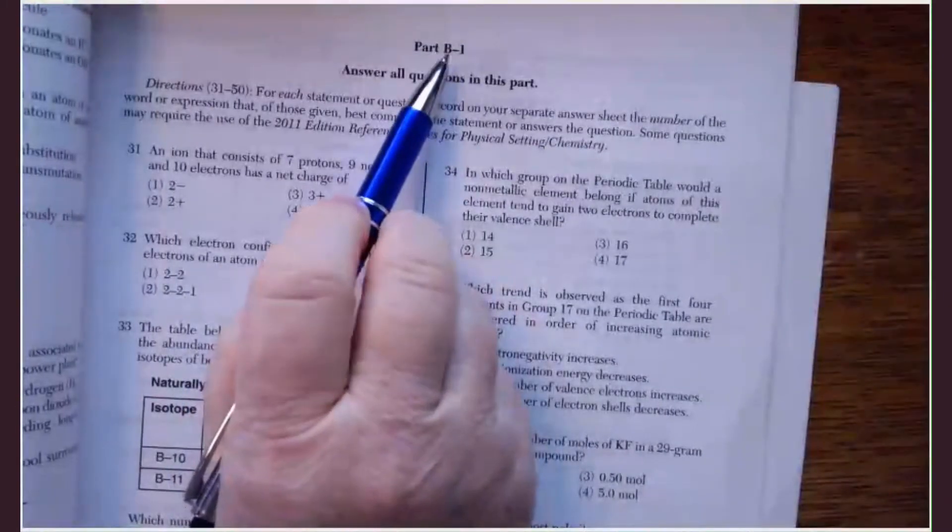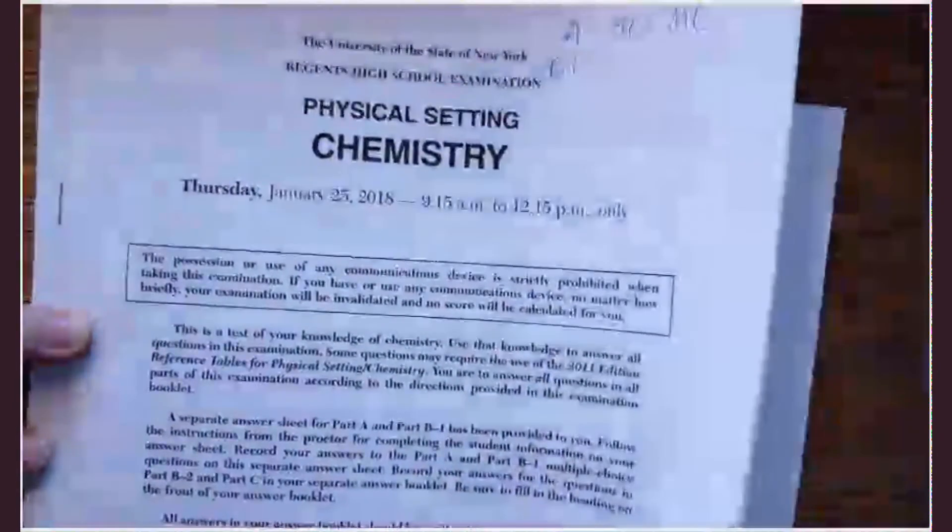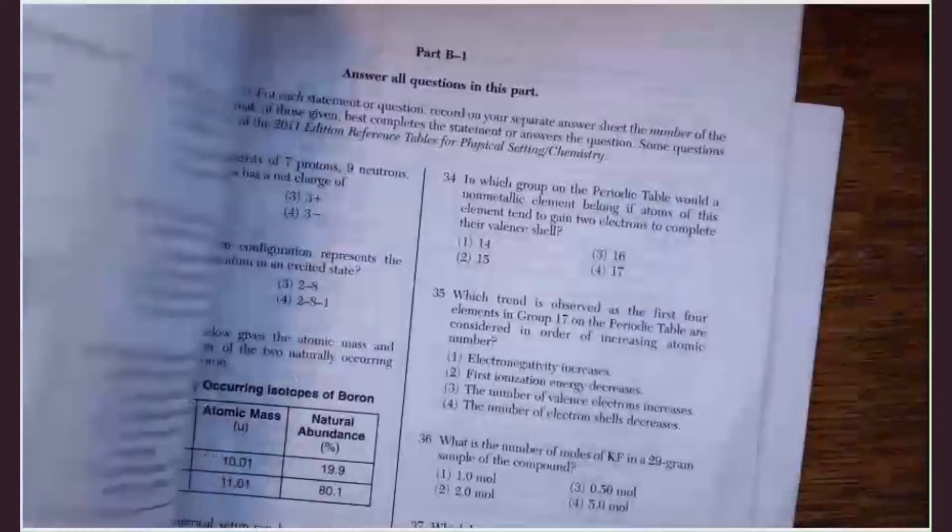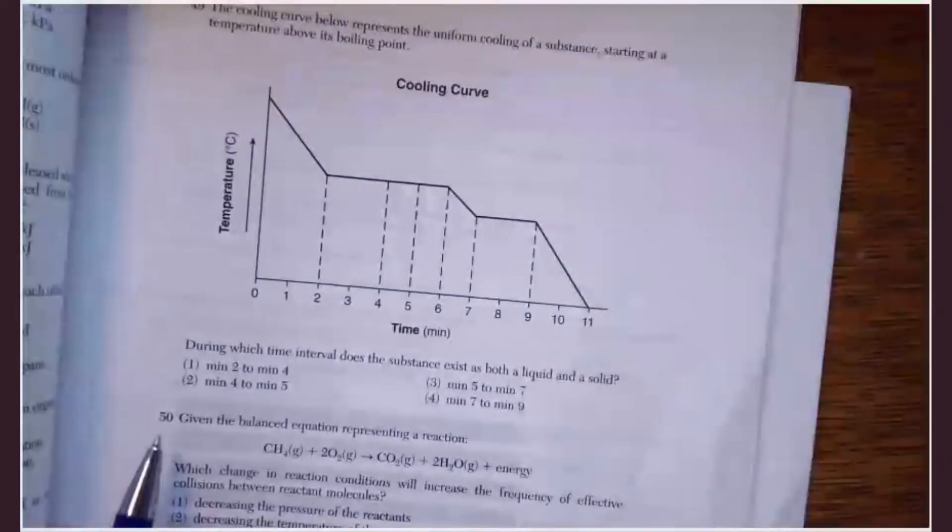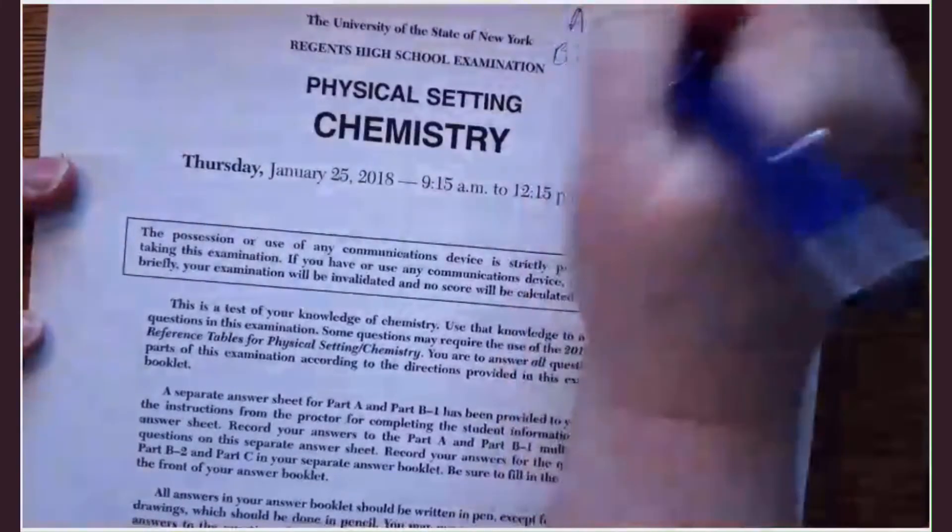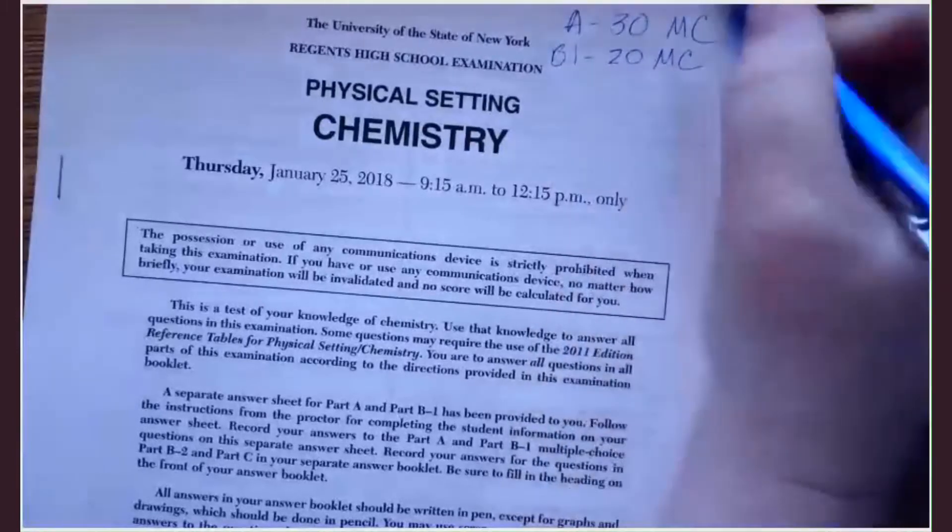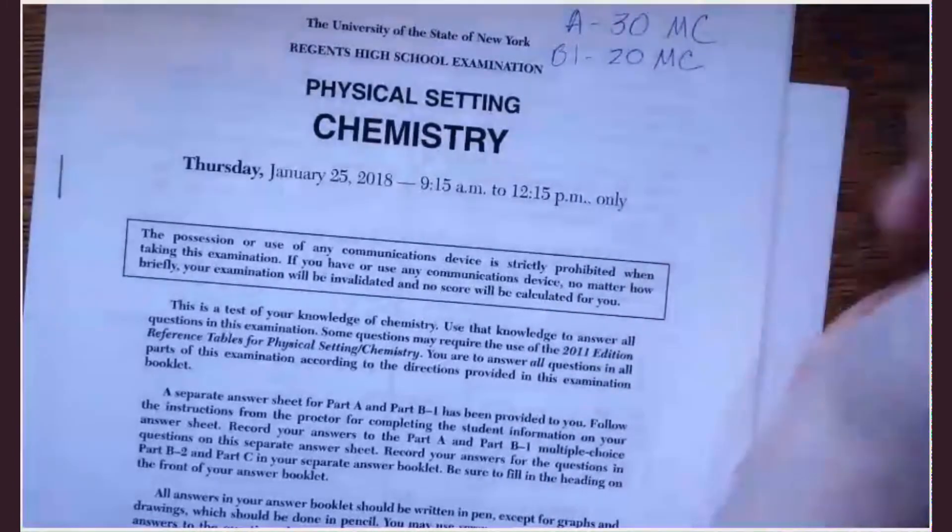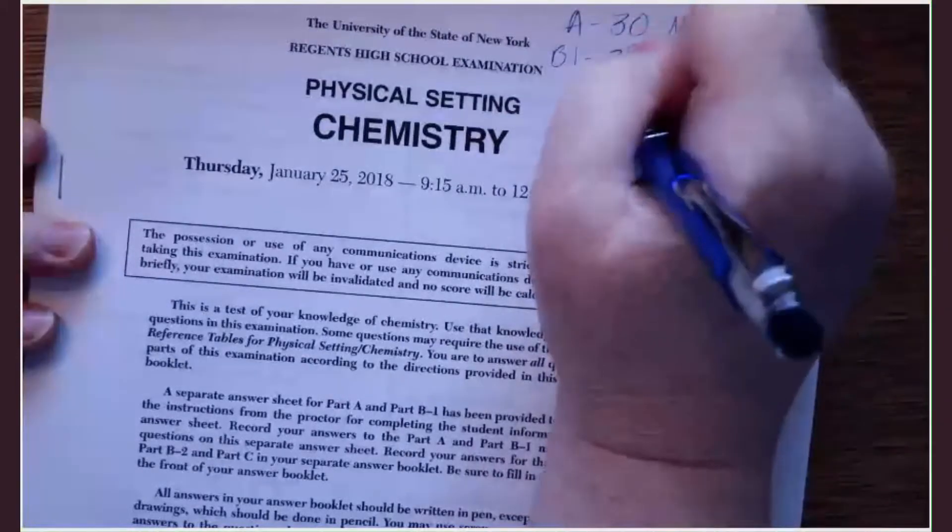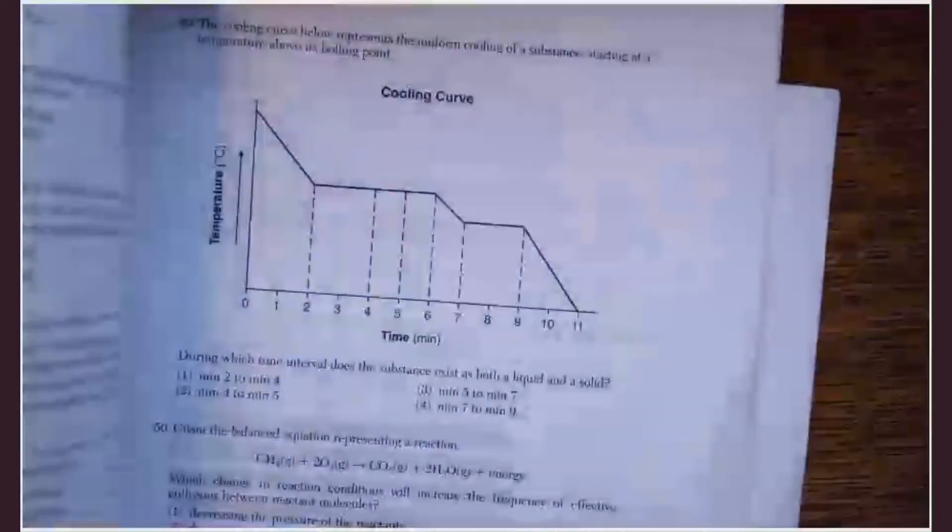What is next? Part B1. So B1 is next. And what is included in B1? More multiple choice questions, up through 50. So that is 20 multiple choice questions. So that looks like I have 50 multiple choice questions.